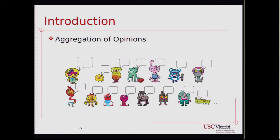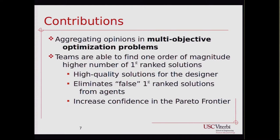In this work, we are going to further improve the state of the art by showing the potential of aggregating opinions in this domain. We are exploring the aggregation of opinions in multi-objective optimization problems. Our experimental results show that a team of agents is able to find one order of magnitude more first-ranked solutions than each single agent, giving the designer a higher number of high-quality solutions to choose from, and eliminating solutions that are falsely reported as first-ranked. This increases the confidence that the designer found the true Pareto frontier.